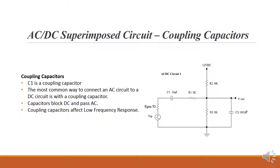C1 is the coupling capacitor. The most common way to connect an AC circuit to a DC circuit is with a coupling capacitor. Capacitors will block DC and pass AC. Coupling capacitors affect low frequency response.